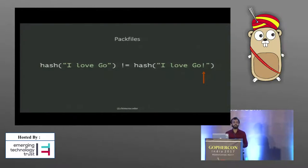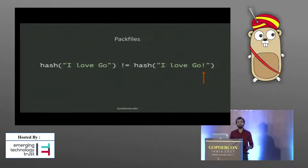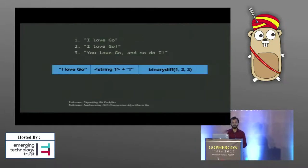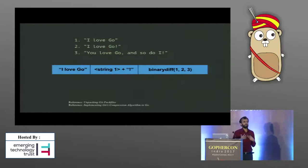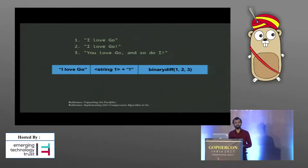A pack file is a double-layered compression scheme that stores binary diffs. These are not the diffs between commits — they're binary diffs that are dynamically generated whenever you push and pull branches. It's done to reduce network usage. I could talk for many hours about pack files, so if anyone's interested in the gory details, come find me afterwards. You can also check out two articles I wrote: 'Unpacking Git Pack Files' and 'Implementing Git's Compression Algorithm in Go.'